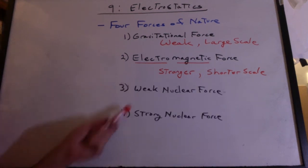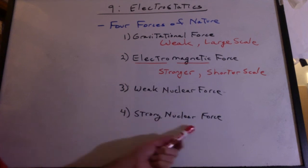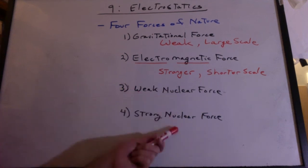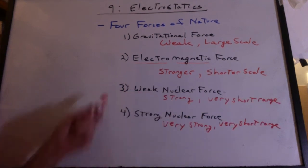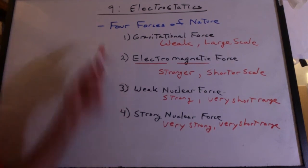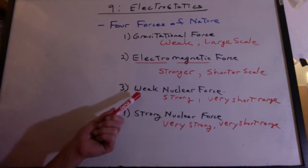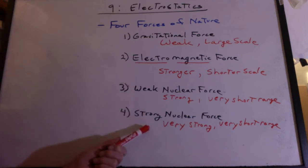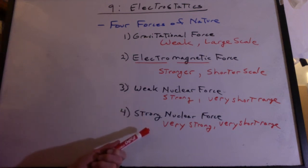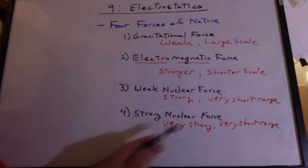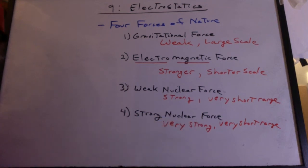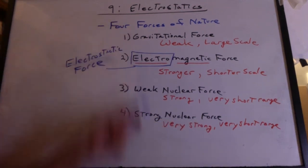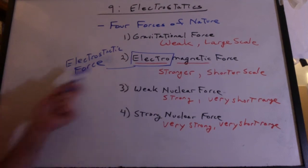The next two forces — the weak nuclear force and the strong nuclear force — obviously work in the nucleus. They're both a lot stronger than gravity and work on a very short range within the nucleus. The weak nuclear force relates to radioactive decay of subatomic particles, and the strong nuclear force is what holds these subatomic particles together. Without the strong nuclear force we wouldn't be able to have a nucleus. So this is the big picture, and now we're going to talk about the electrostatic force.